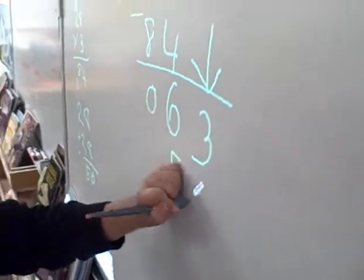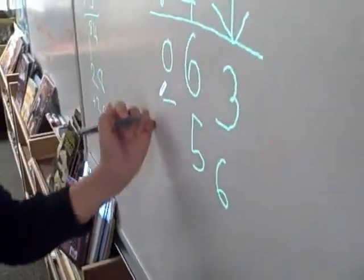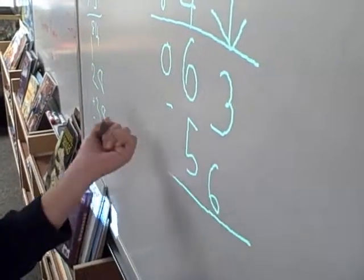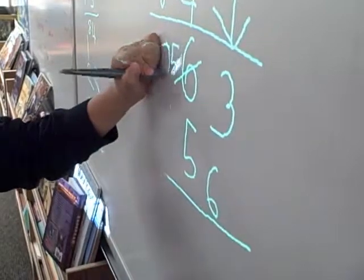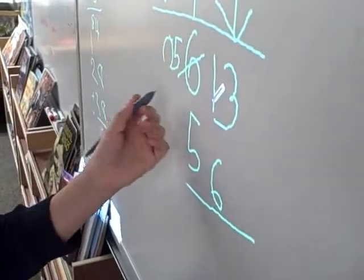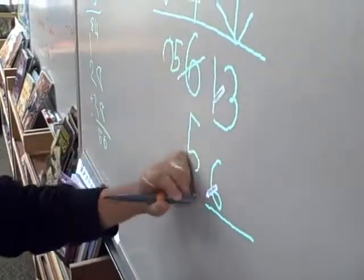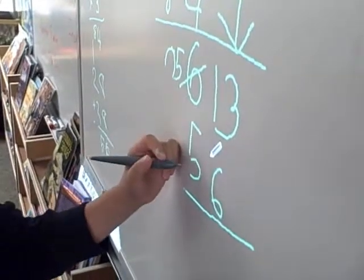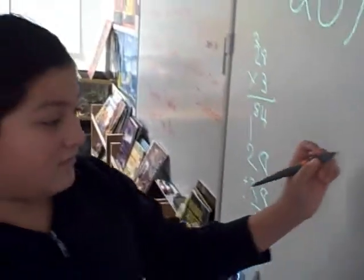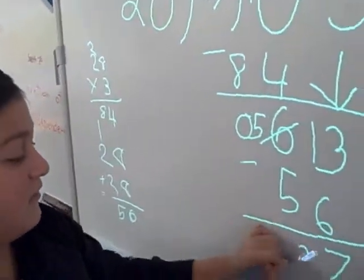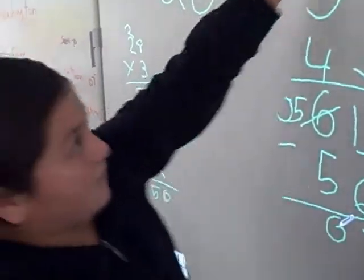So I put it over here, and I did 63 minus 56, and you can't do 3 minus 6, and it came over here, and this is 13 now. And 13 minus 6 is 7, and 5 minus 5 is 0, and so it's 32 remainder 7.